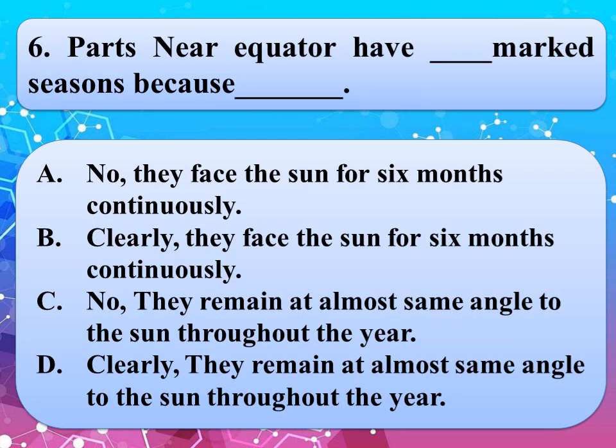Our next question is: Parts near equator have ___ marked seasons because ___. Read the options very carefully. And the correct answer is option C, no, they remain at almost same angle to the sun throughout the year.